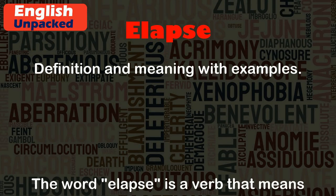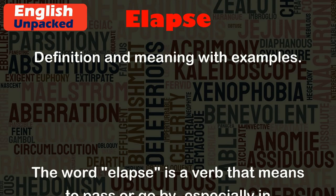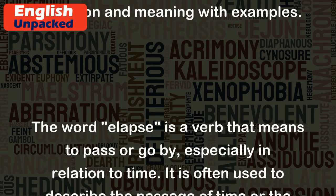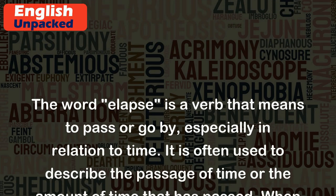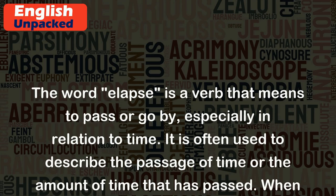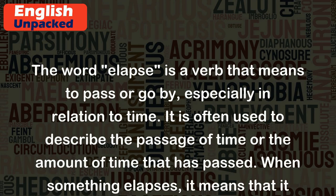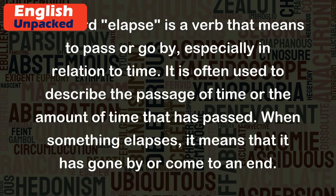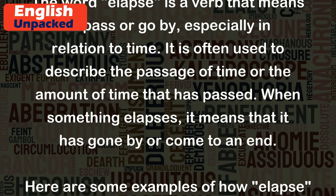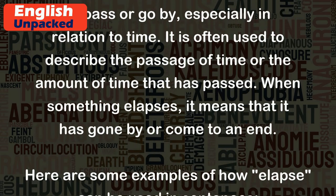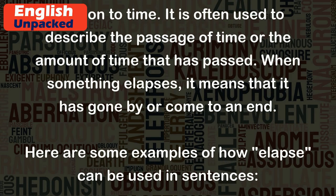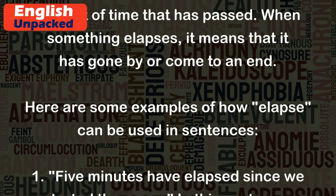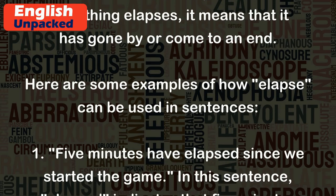The word elapse is a verb that means to pass or go by, especially in relation to time. It is often used to describe the passage of time or the amount of time that has passed. When something elapses, it means that it has gone by or come to an end. Here are some examples of how elapse can be used in sentences.